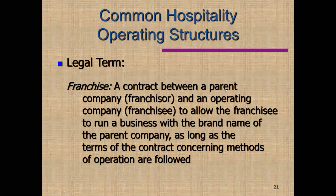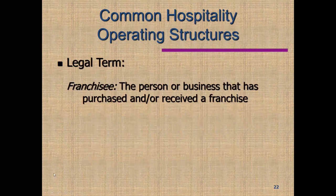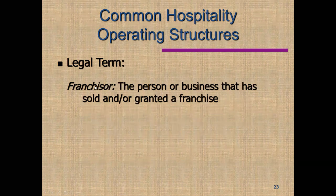The parent company allows the franchisee to run a business with the brand name of the parent company — in other words, call itself McDonald's — as long as the terms of the contract concerning methods of operation are followed. So if Bob's McDonald's doesn't play by the rules, McDonald's can sue Bob. The franchisee is Bob, the person buying the right to use the McDonald's name. The franchisor is McDonald's, the person who has sold or is granting a franchise and has the business plan.